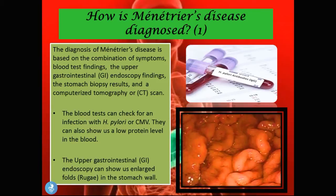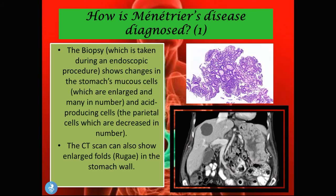The upper GI endoscopy can show enlarged folds, which are the rugae in the stomach. In the picture on the right, you can see those very enlarged folds which have a worm-like appearance in comparison to the normal stomach. The biopsy, which is taken during the endoscopic procedure, will show changes in the stomach's mucous cells — which will be enlarged and many in number — and the acid-producing parietal cells, which will be decreased in number.